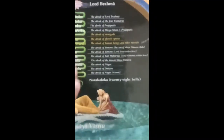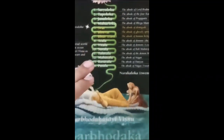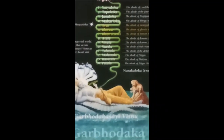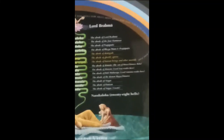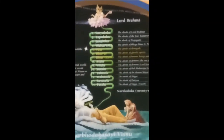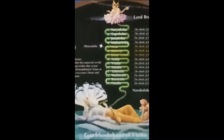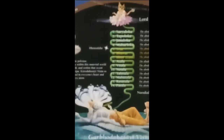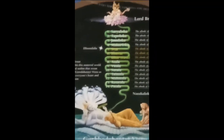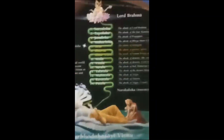Below the earthly planetary system there are seven Lokas. So seven Lokas below Bhur Loka, six Lokas above Bhur Loka, and Bhur Loka itself in between — making a total of fourteen planetary systems. In each universe there are fourteen planetary systems.